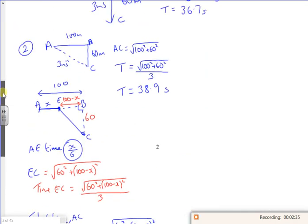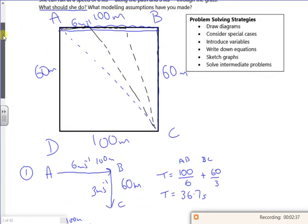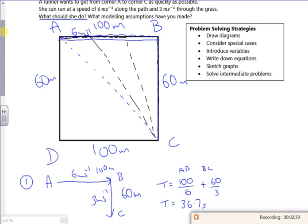And it gave an x value of 65.4 metres, so I leg it across here to 65.4 metres before I run across the grass.